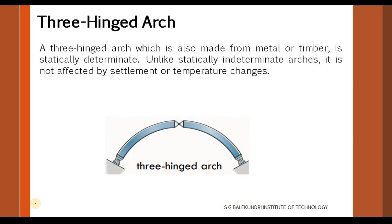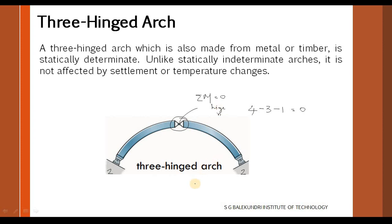A three-hinged arch, also made from metal or timber, is statically determinate. We have two reactions at each support, giving four unknown reactions, and three equilibrium equations. But because of the hinge introduced at the crown, we have one additional equilibrium equation — that the moment at the crown hinge is zero. This gives four equations for four unknowns, so it is determinate. That is why this arch becomes a determinate arch.